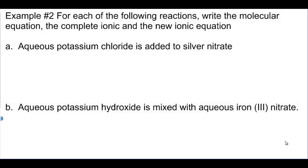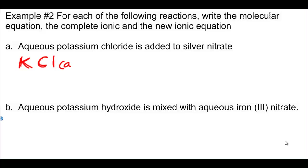What they want you to do is write the molecular, complete ionic, and net ionic equations. Even when they only ask for the net ionic, I recommend walking through all three in order — it's easier to arrive at the net ionic that way. Here's our example: aqueous potassium chloride is added to silver nitrate. First, get the proper formulas. Potassium is K⁺ and chloride is Cl⁻ — charges of plus 1 and minus 1 — they equal zero, so the formula is KCl(aq). Erase the charges; don't leave them in.